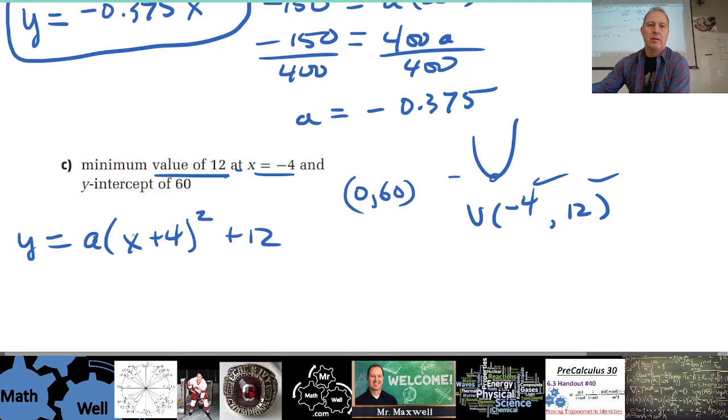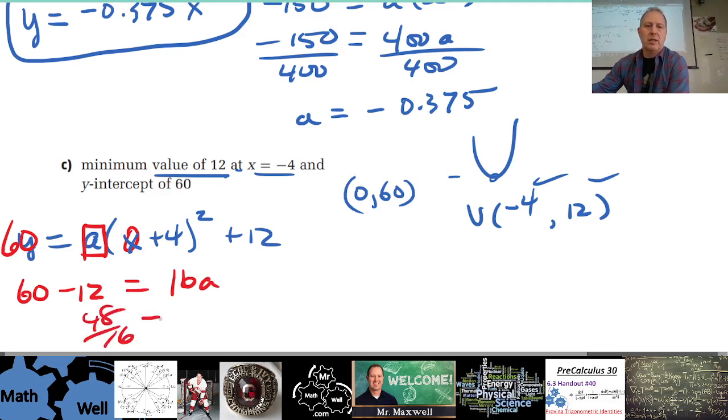Now I will put in 0 here and 60 here, and I'll solve for my a. So 16a, what's that, 48 over 16 equals a, what's that, 4, 8 over, 3, 4, 3, 4, 4, 12, 3, right? It's 3, okay.